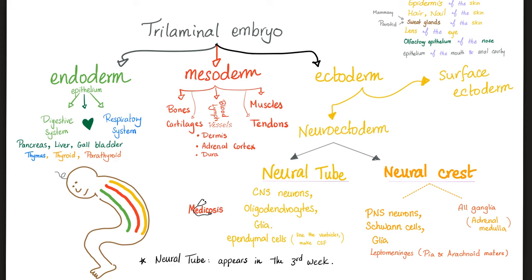Tell me about the mesoderm. The key words here are connective tissue and muscle tissue. Your bones are mesoderm; cartilages, mesoderm; muscles, mesoderm; tendons, mesoderm; blood, mesoderm; lymph, mesoderm; blood vessels, mesoderm; lymph vessels, mesoderm; the dermis, mesoderm; adrenal cortex, mesoderm; and the dura mater is mesoderm — it's very strong, powerful connective tissue. Please be careful: the dermis is mesoderm, but the epidermis is ectoderm — from the surface ectoderm.